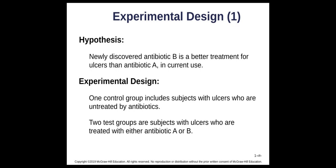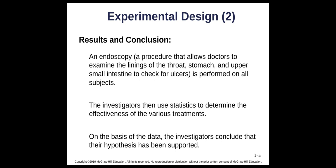With experiments, here is a hypothesis: this newly discovered antibiotic is better than antibiotic A. You have a control group — subjects with stomach ulcers who are untreated — and a test group treated with either antibiotic A or B. Results come from an endoscopy where doctors examine the linings of all the people. Statistics determine the effectiveness of the treatments, and based on the data the investigators conclude their hypothesis is supported and antibiotic A is better.